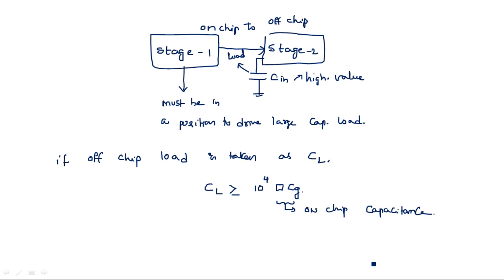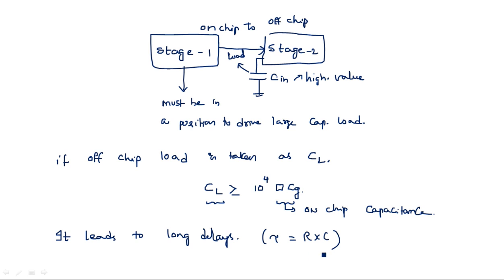When this type of situation occurs, because of this higher capacitance value it leads to long delays. Delay is equal to resistance times capacitance — when the capacitance value is high, delay increases. The capacitance is something we cannot reduce, so the one thing we can reduce is resistance. We have to use a circuit with low resistance to drive such large capacitance loads. In such cases there are three methods.